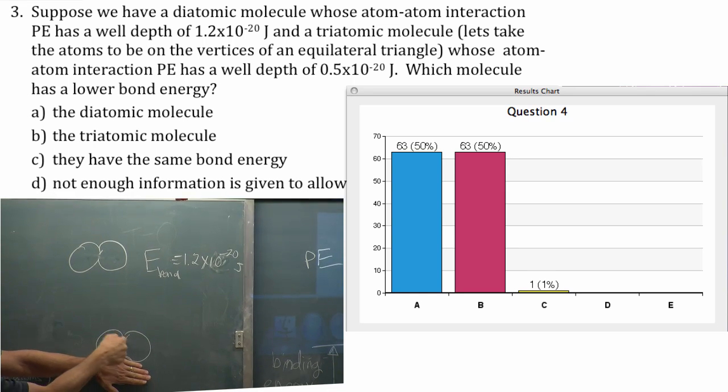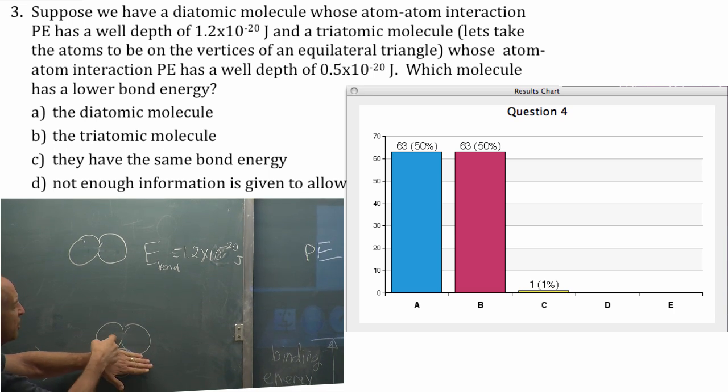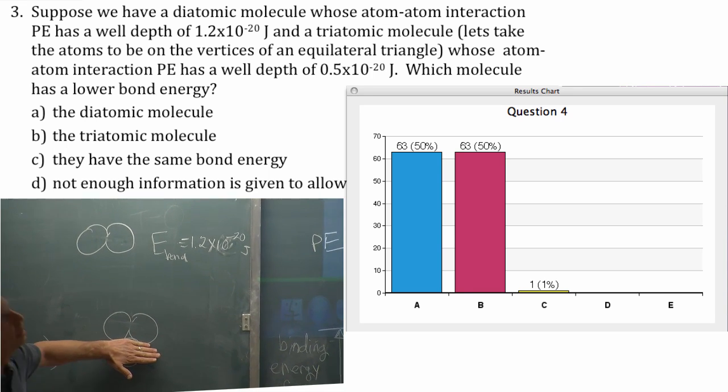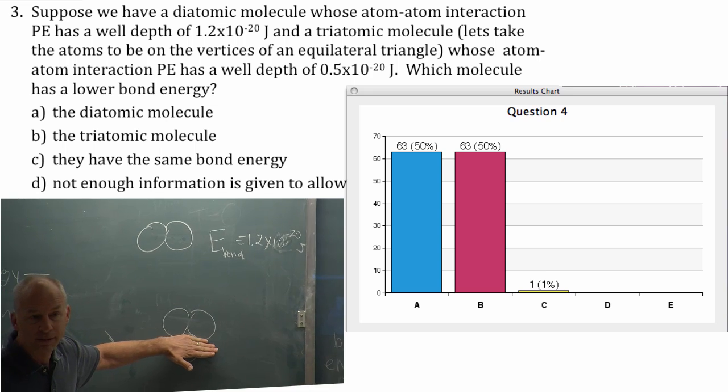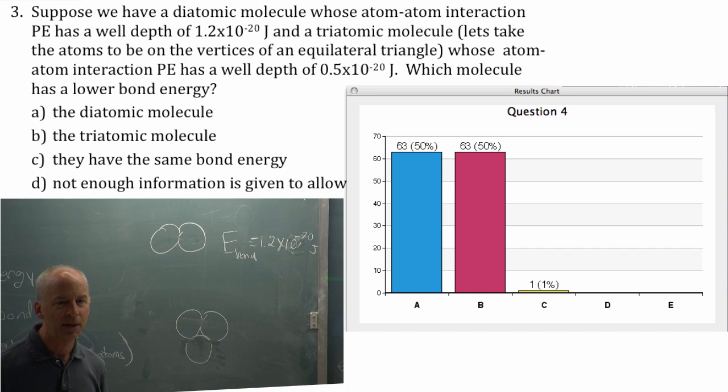What about those two atoms? What's the bond energy of those, just those two, when they form? Negative 0.5. So there's a negative 0.5 for that. And then I bring this one up. How many more bonds are there? Two more. So that lowers the energy by how much when those two bonds form? Another negative 1.